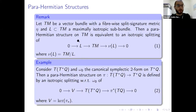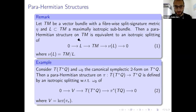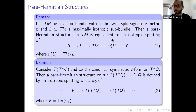If we pick any maximally isotropic sub-bundle L of our tangent bundle, we can construct a parameission structure by picking an isotropic splitting of the short exact sequence associated with L, where the normal bundle of this maximally isotropic sub-bundle appears. This construction gives us basically any parameission structure up to B-transformations.